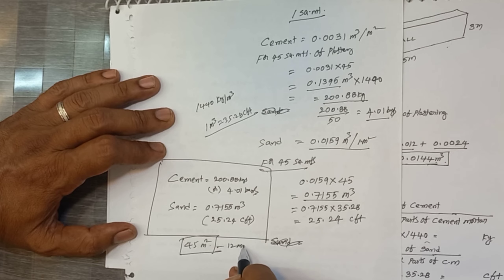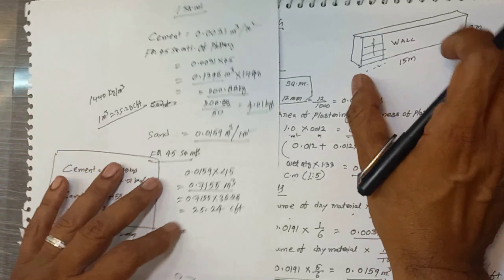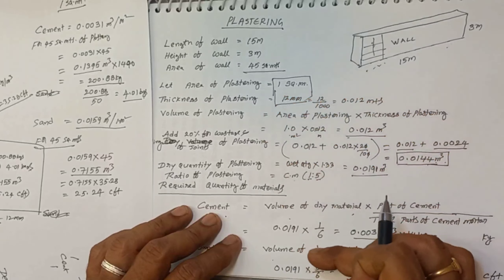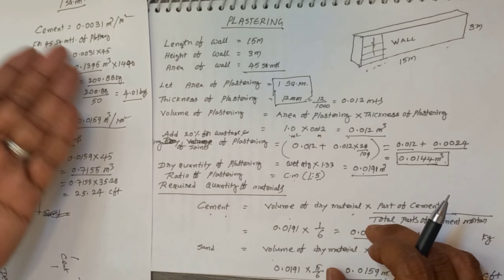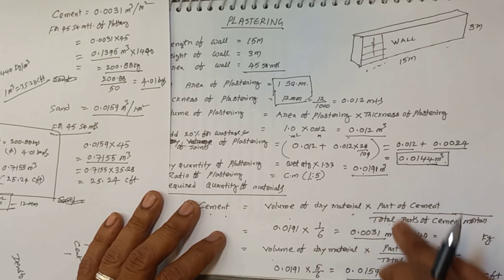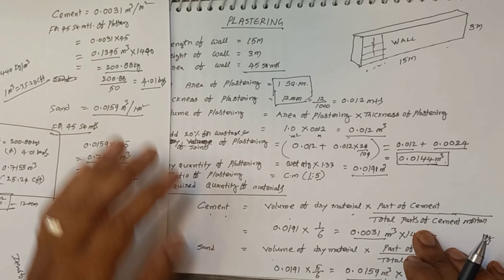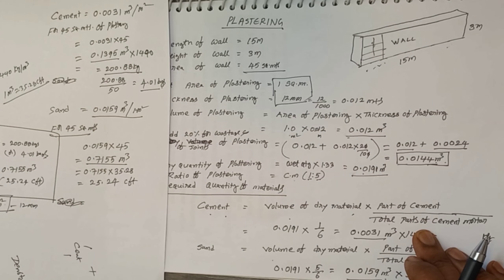This is the problem. We calculated for the wall — first for 1 square meter, then multiplied for the total square meters. If you like this video, please subscribe and comment in the comment box. In the next video, we will calculate more quantities.